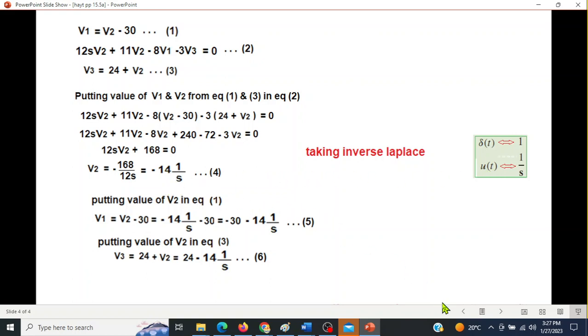So minus 14, 1 over S will become V2(t) will become minus 14 U(t). For 1 over S we will get U(t) voltage. Then we come to the second one.